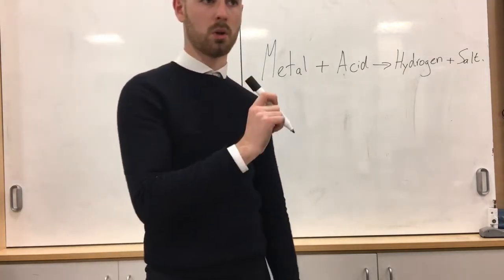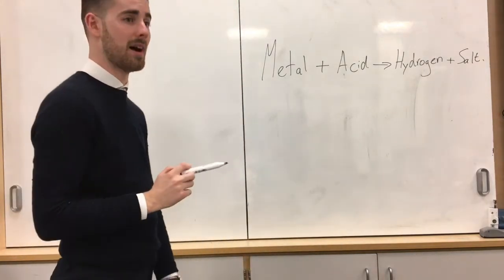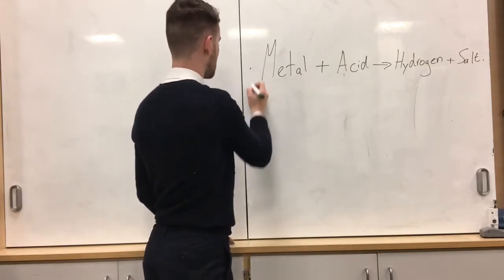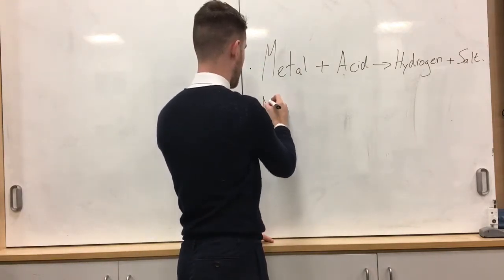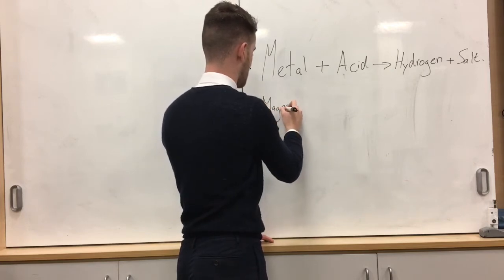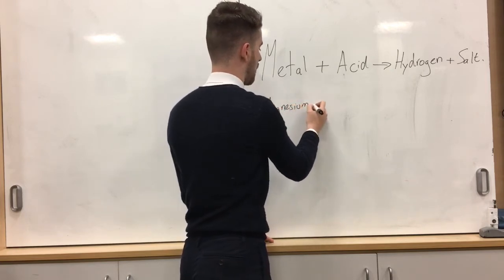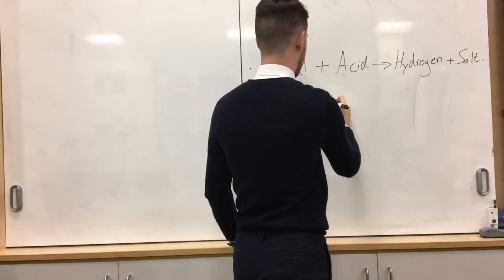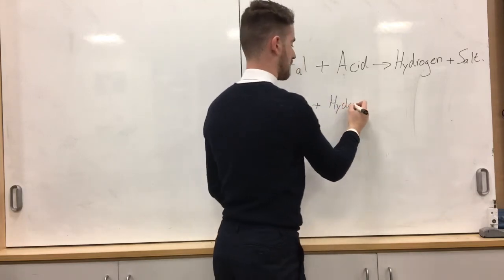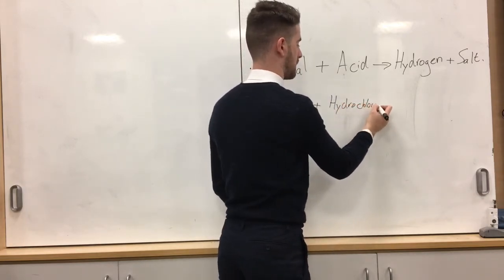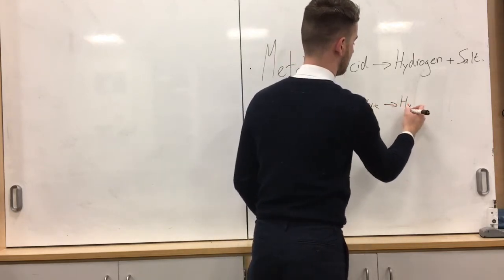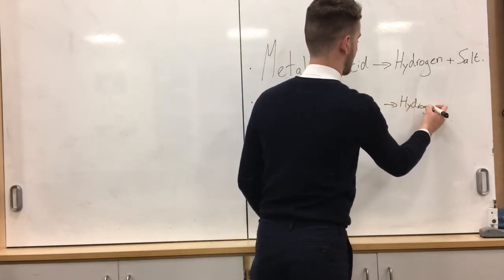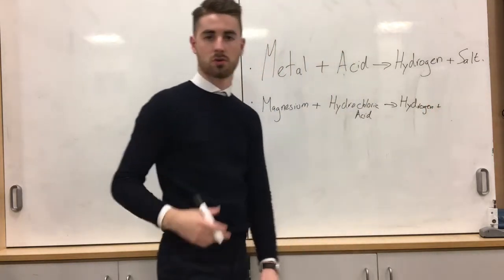So we'll look specifically at the reaction that I just did there. So this is our general equation to look at the specific equation. So we had magnesium metal. We had hydrochloric acid. And that gave us hydrogen. And it gave us salt.